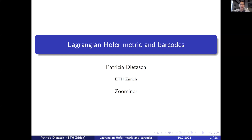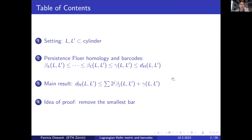Thanks for the invitation. Here is the outline of the talk. We work in the setting of the cylinder and are interested in closed exact Lagrangians L and L'. The goal is to understand the Lagrangian Hofer metric. I'll explain how to associate a barcode to L and L', and extract invariants: gamma, the spectral metric, and the betas, which are the lengths of the finite bars. The main result is an upper bound of the Lagrangian Hofer metric in terms of the betas and gamma.